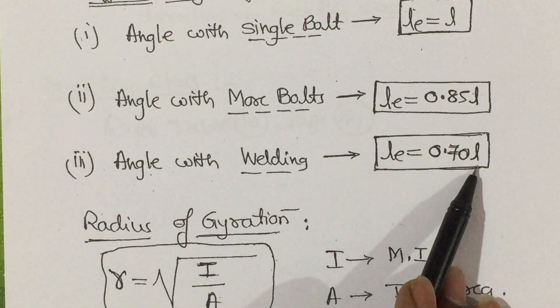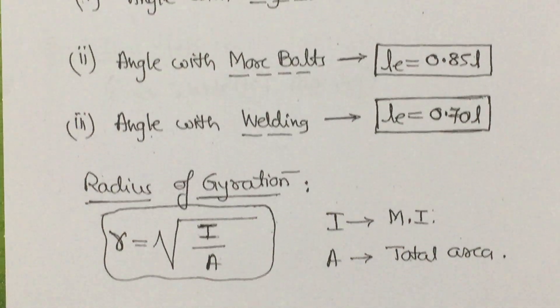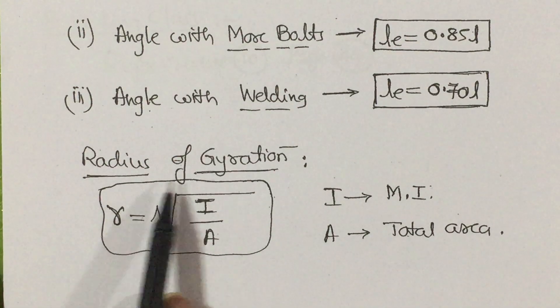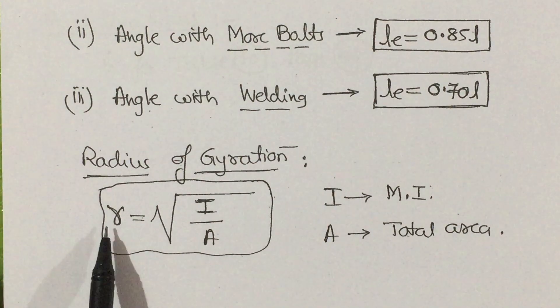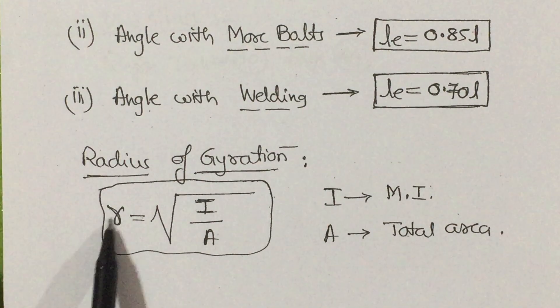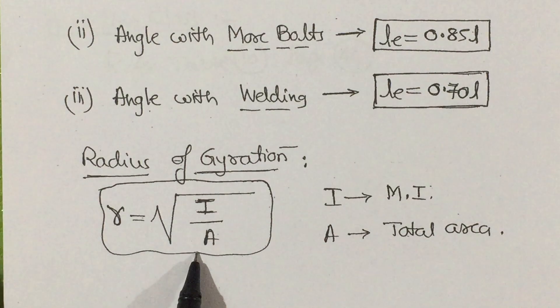Then if you come to the radius of gyration, sometimes it will be denoted by small k or small r. r equals square root of i by a, where i is the moment of inertia, a is the total area.